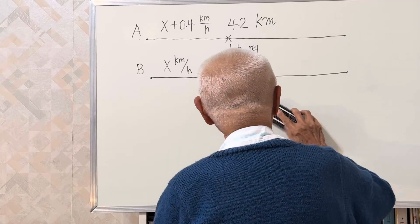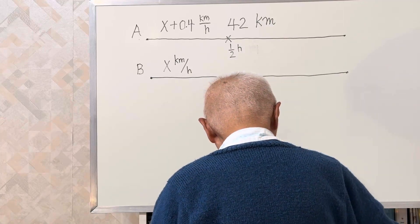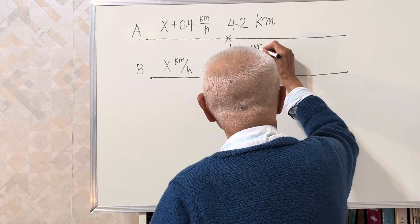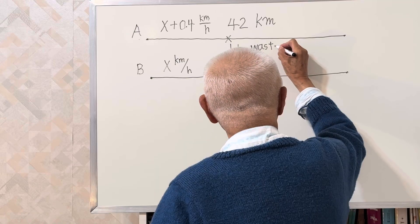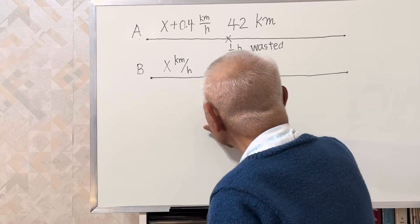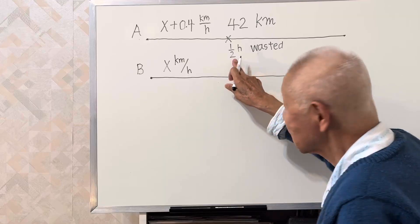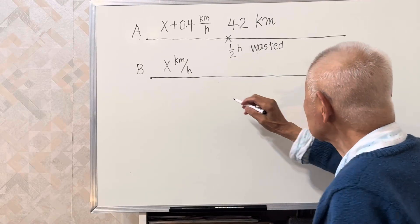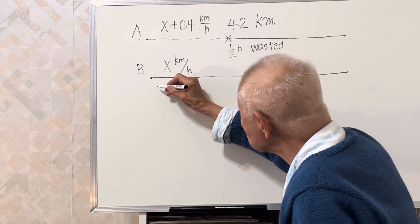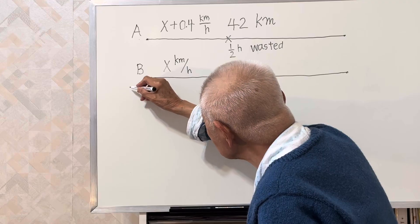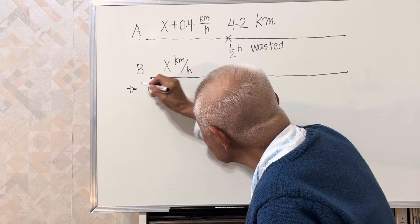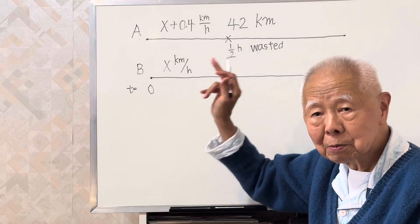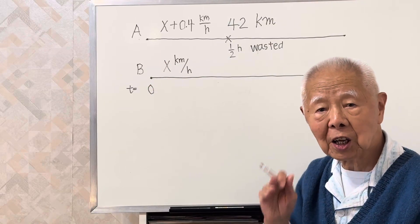So A wasted half an hour. Let's say this is wasted. Suppose this is zero time — T equals zero. A starts and B starts. They both start at the zero hour, T equals zero.